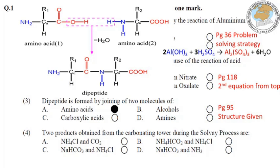Question number 4: Two products obtained from the carbonating tower during the Solvay process are — یہ page 151 کی اوپر اس کی complete diagram given ہے۔ Answer is sodium bicarbonate (NaHCO₃) and ammonium chloride (NH₄Cl) — answer is C۔